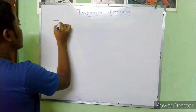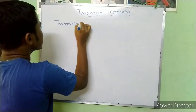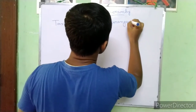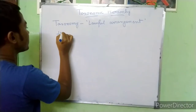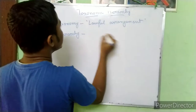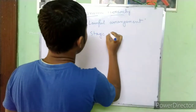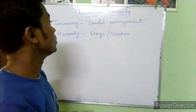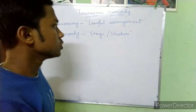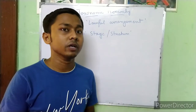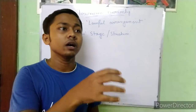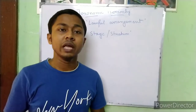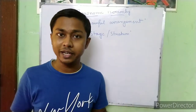The meaning of taxonomic hierarchy: 'taxo' means lawful arrangement, and 'hierarchy' means stage or stratum. So taxonomic hierarchy refers to how living organisms are arranged lawfully according to which stage or level they belong to in the classification system.